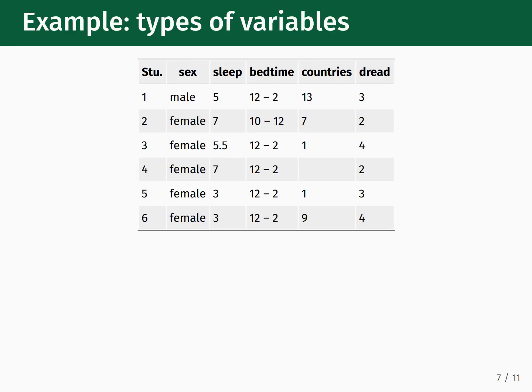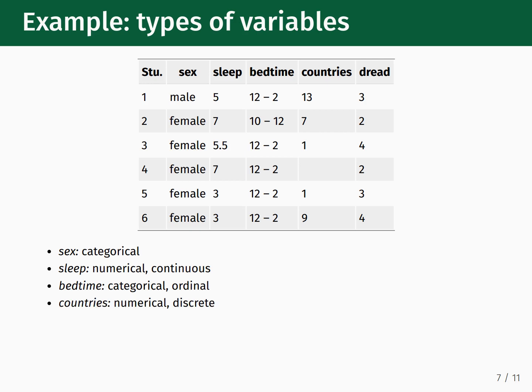Let's use our poll of students at the beginning of a data science class to illustrate these concepts. The sex of the student would be an example of a categorical variable. The average number of hours they report sleeping every night is an example of numerical data that is also continuous. The time ranges students reported going to bed is an example of a categorical variable that is also ordinal. The number of countries students have visited in their lifetime is a numerical variable that is discrete — for example, it's not possible to visit 2.5 countries. And dread can be classified as categorical and ordinal, or possibly numerical; either would work.